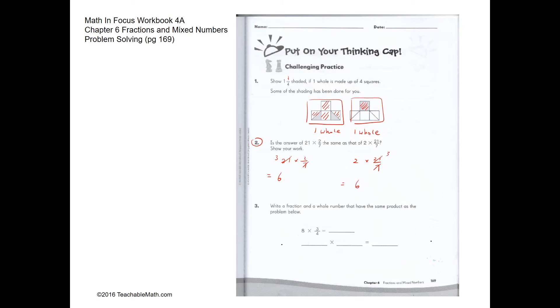Write a fraction and a whole number that will have the same product as the problem given. So over here this is 6. So if we want to have a fraction and a whole number, we can have in this case the answer will also be 6.